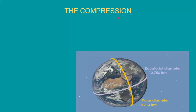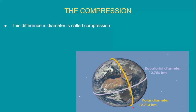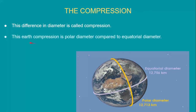The compression is the difference in diameter — here we are talking about the earth's equatorial diameter and earth's polar diameter. Earth is not a perfect sphere, so we have some distortion in earth's shape, meaning the equatorial diameter is not equal to the polar diameter. The equatorial diameter is 12,756 km and the polar diameter is 12,713 km. Earth compression is the polar diameter compared to the equatorial diameter.